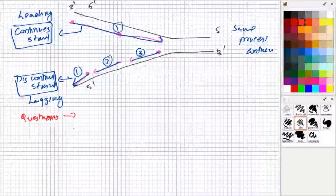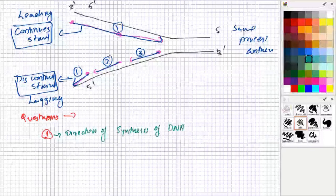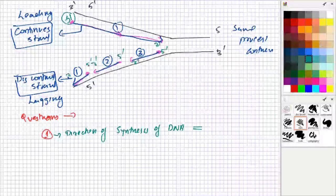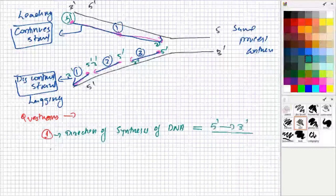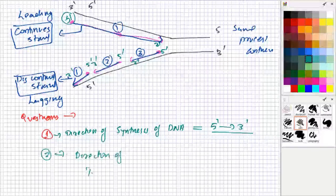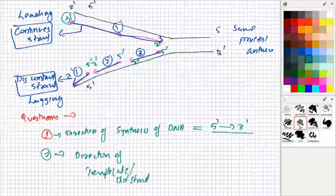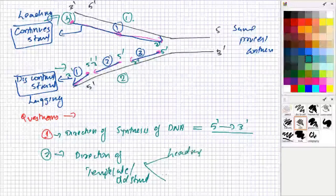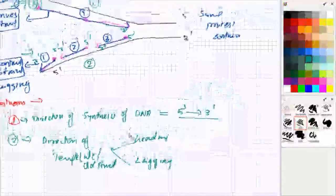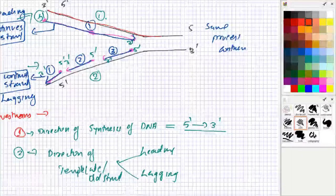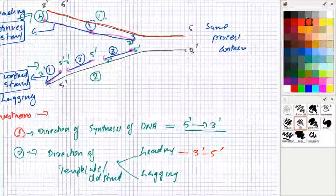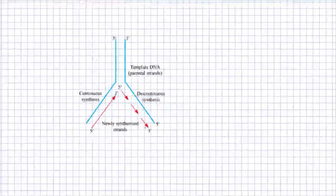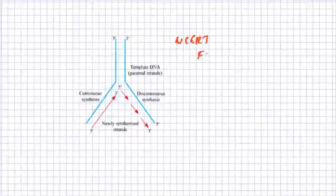An important question coming from this area is: what is the direction of the synthesized strand? That will always be from 5' to 3', because the enzyme has its own direction. The second question is: what is the direction of the template strands — the old strands? The leading strand template will have the opposite direction to the enzyme, that is 3' to 5'. The lagging strand template will have the direction 5' to 3'.